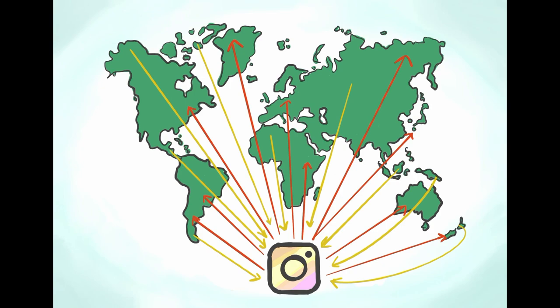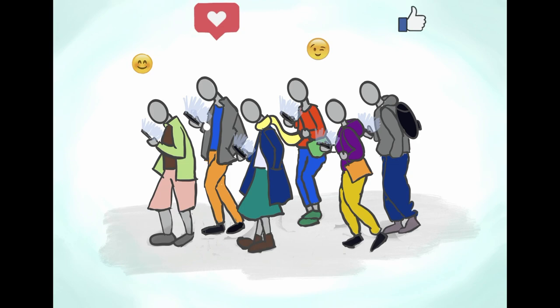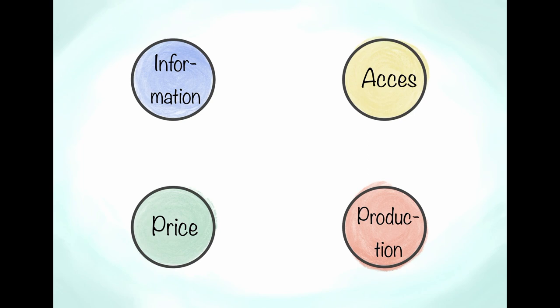This regulation is also achieved through attention control. People spend more and more time on their digital devices and a big portion of that on the platforms of big tech companies. Accordingly they have a big portion of our attention and are working on increasing that time. Because if you have the attention of people you can manipulate their consume behavior. They do that through the control of four key aspects.